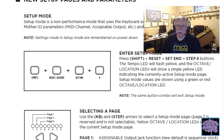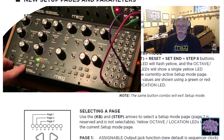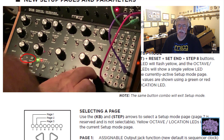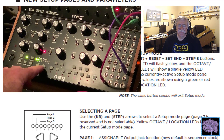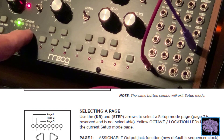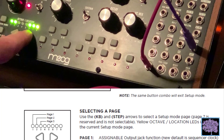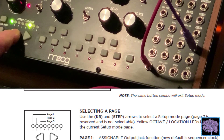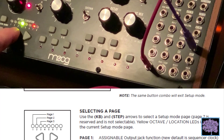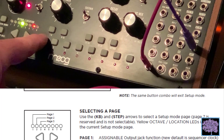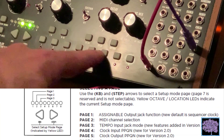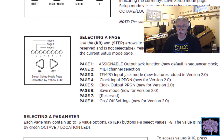Setup mode now has many more options — seven of the eight available pages are now in use. Setup mode is entered by pressing and holding Shift, Reset, Set End, and the Step 8 button in sequence. The tempo LED will start blinking yellow to show that you are in Setup mode. One of the Octave Location LEDs will light solid yellow to show you what page you are on, and each page can have up to 16 options. Options 1 through 8 are selected by pushing one of the Step buttons, resulting in the corresponding Step LED lighting green. Options 9 through 16 are selected by holding the Shift key and then pressing one of the eight Step buttons, which will result in the corresponding LED lighting red. If the option selected happens to be the same as the page number, that LED will alternate between yellow and red or green as appropriate.